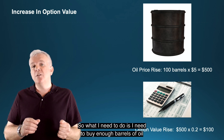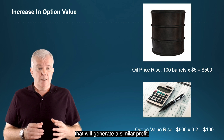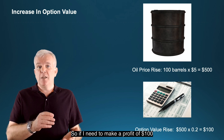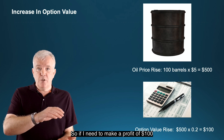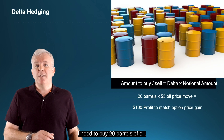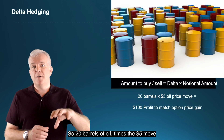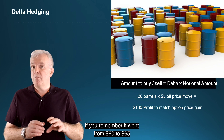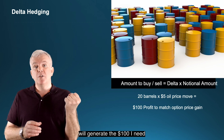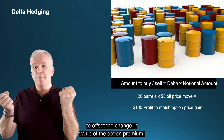What I need to do is buy enough barrels of oil to generate a similar profit. If I need to make a profit of $100, I need to buy 20 barrels of oil. So 20 barrels of oil times the $5 move — it went from $60 to $65 — will generate the $100 I need to offset the change in value of the option premium.